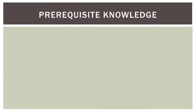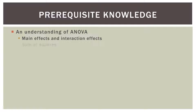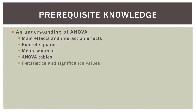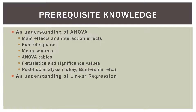What should you know before starting this video? First, you should have an understanding of ANOVA: main effects and interaction effects, sum of squares, mean squares, how to read ANOVA tables, F-statistics and significance values, and post-hoc analyses such as Tukey and Bonferroni. You should also understand linear regression — regression slopes, p-values, and coefficients. You can think of ANCOVA as a marriage of ANOVA and regression, so if you understand those two things, you can get a firm grasp of ANCOVA.